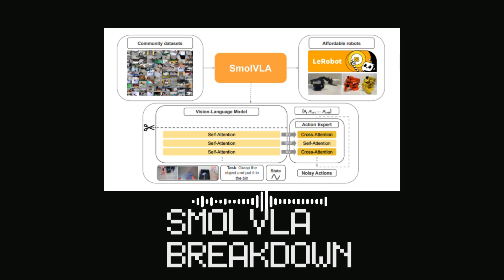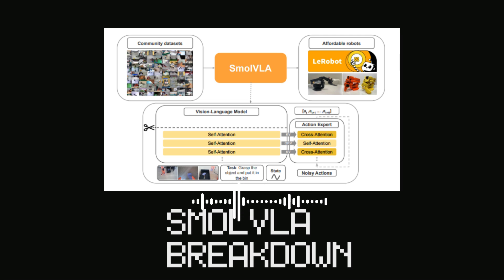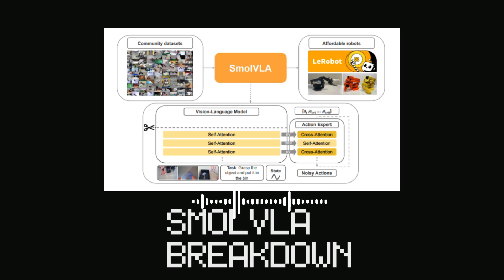What about the flow-matching part? That's their training objective. They use a flow-matching objective, which has been shown to outperform standard regression methods like L1 loss — crucial for modeling complex, multimodal action distributions that robots need to handle. They also use a causal attention mask for the self-attention layers, ensuring each action token only looks at past tokens within its chunk. This prevents future action dependencies and boosts performance.